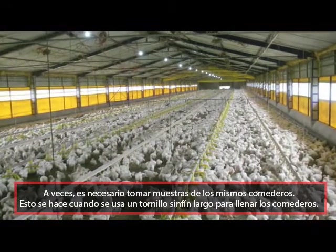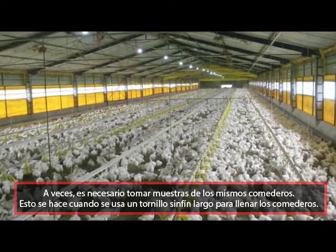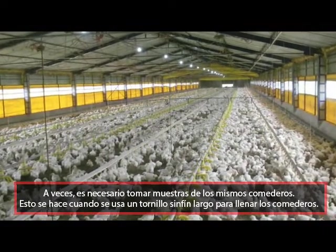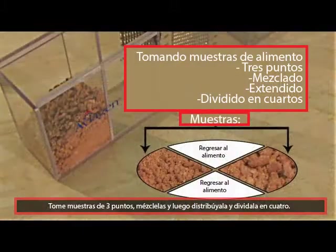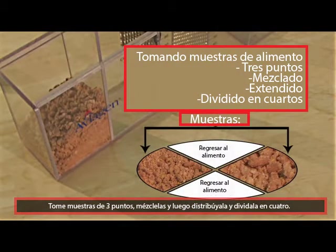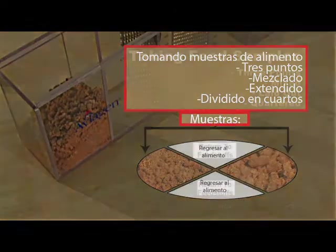For example, if a long auger is used to supply the feed to the feeders. Samples should be taken from three points, mixed and then laid out and quartered. Two opposite quarters should then be taken for testing.